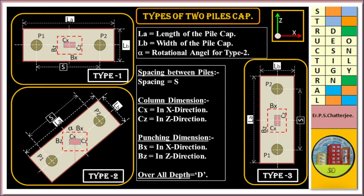Types of two PileCap: Type 1, Type 2, and Type 3. LA is the length of the PileCap. LB is the length and width of the PileCap. Alpha is the rotational angle for Type 2. S is the spacing between piles. CX is the column dimension in X direction and CZ is the column dimension in Z direction.